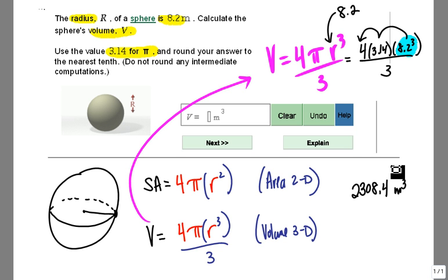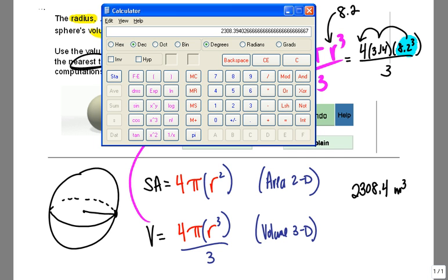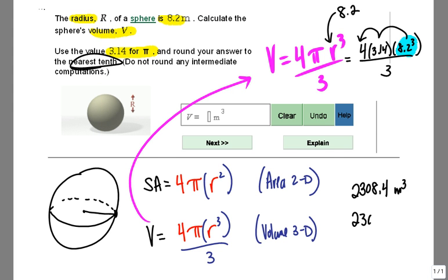Now we want to find out—it says round your answer to the nearest tenth. So we actually need to go get one more decimal here. It's 0.39, so it's 2,308.39. Rounding to the nearest tenth, which means we round to that position, gives us 2,308.4.